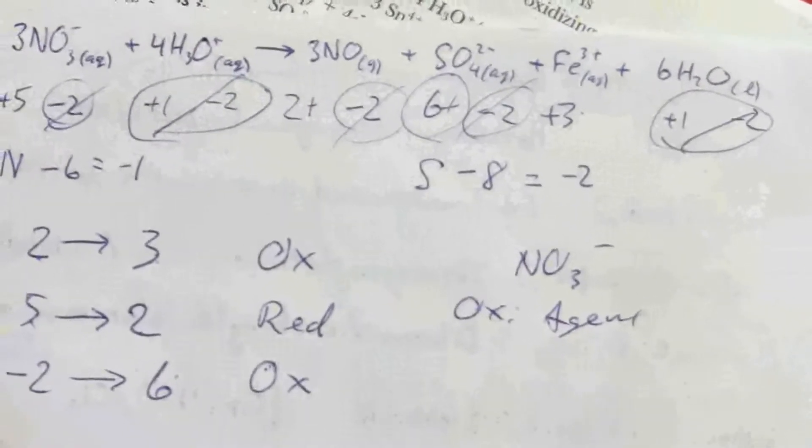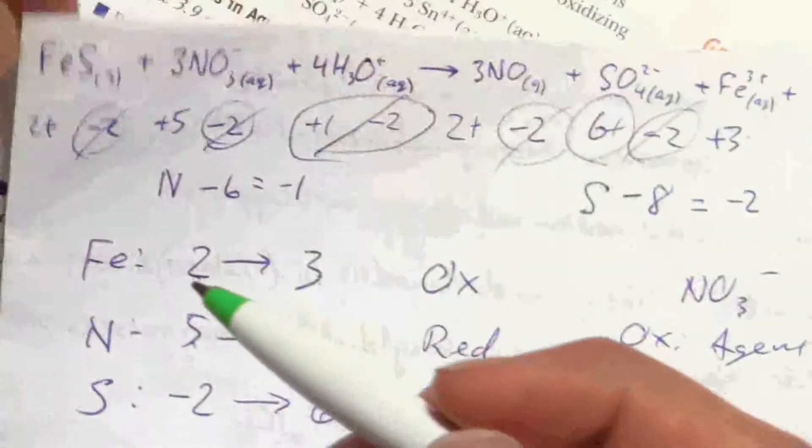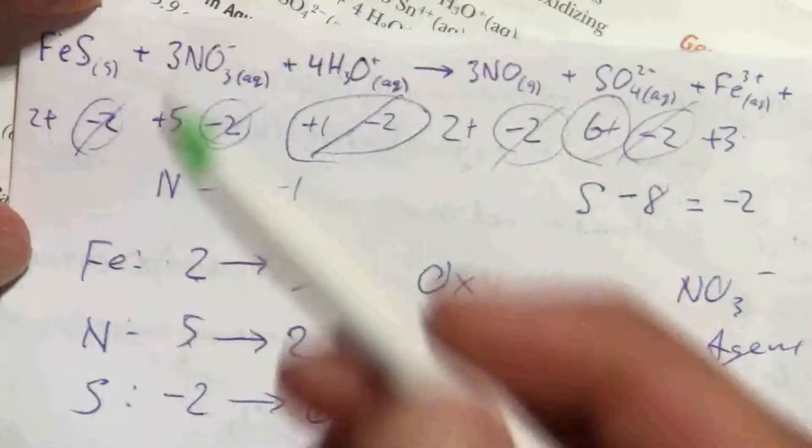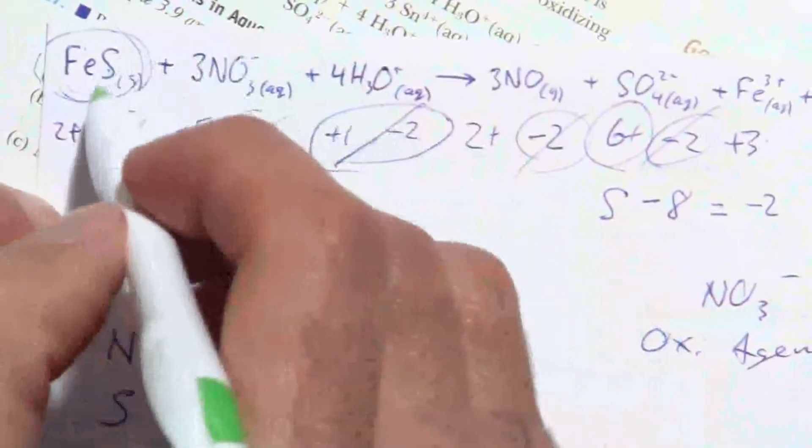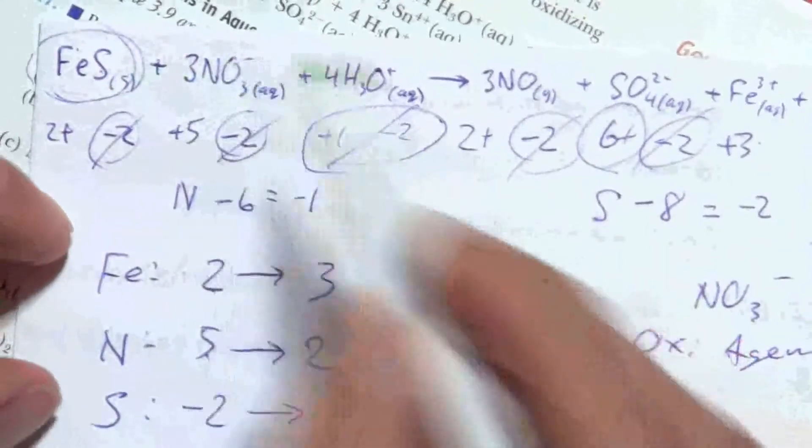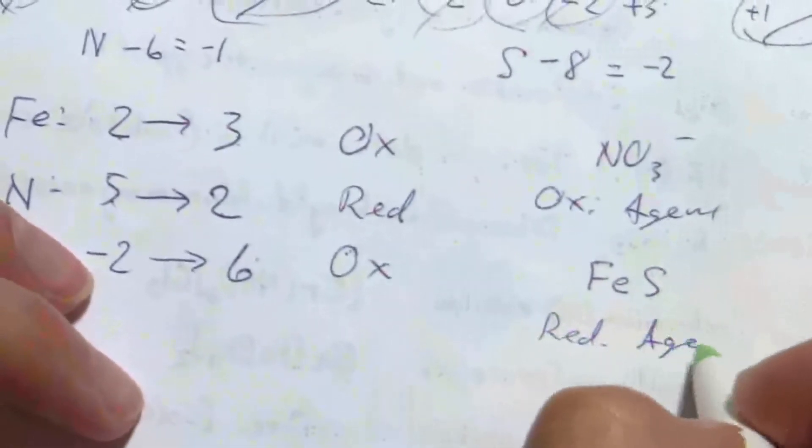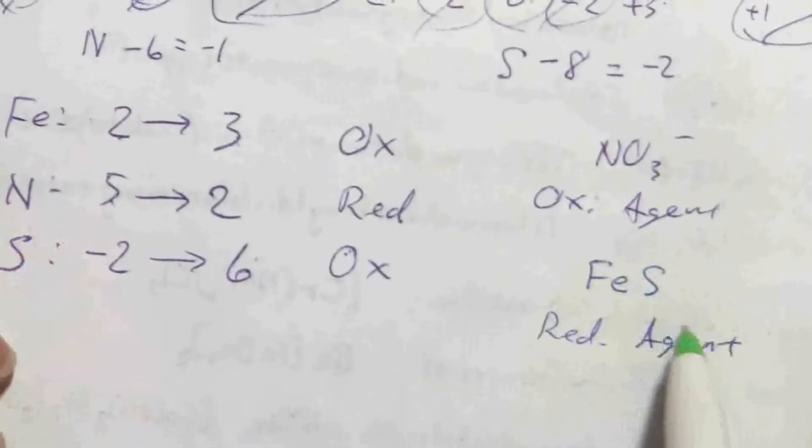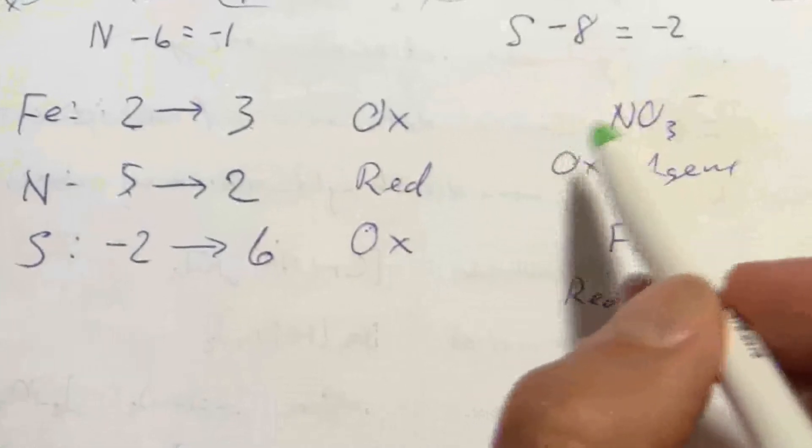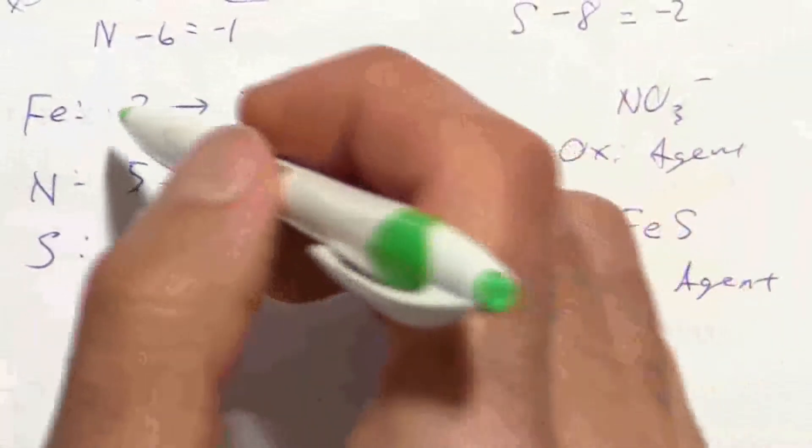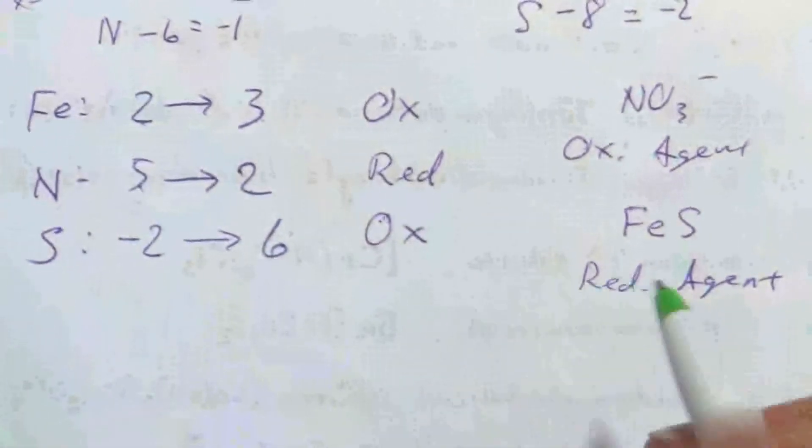And the reducing agent, you might think there's two reducing agents. But this is where we're looking at this in terms of what are we using to reduce the nitrogen. Well, we're using iron sulfide, iron two sulfide, to reduce the nitrogen. And so, FeS is our reducing agent. So, iron two sulfide is the reducing agent to reduce the nitrogen in the nitrate. And the nitrate is the oxidizing agent. That's what we're using to oxidize both of the elements, the iron and the sulfur in that iron sulfide.